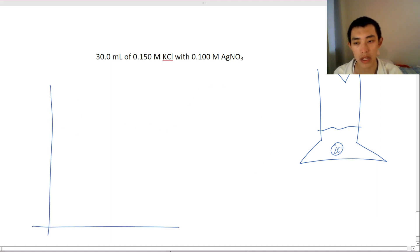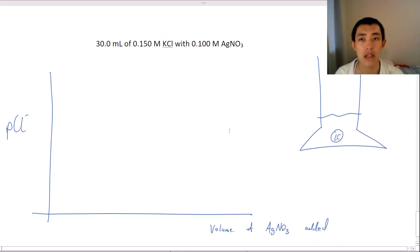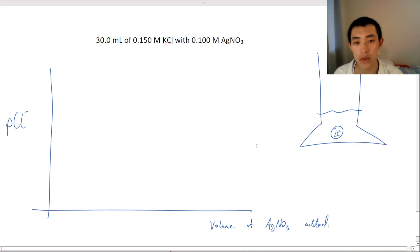Okay, so what's the curve going to look like? We're going to have pCl, and we're going to have a volume of AgNO3 added. So just given this information, we can already begin to calculate exactly what it's going to look like. So there's several key points that we need to kind of go through.